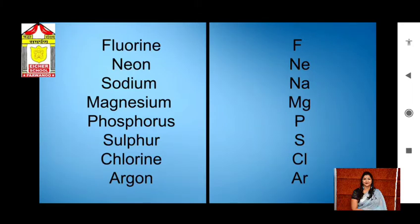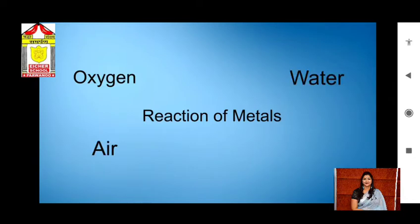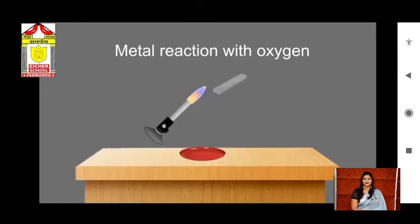Dear children, now let us study these elements further and talk about the chemical properties of metals and nonmetals. Metals react with oxygen, water, air and acids. When iron comes in contact with oxygen and moisture it becomes rusty. You must have seen rust on iron objects — it converts into its oxide.